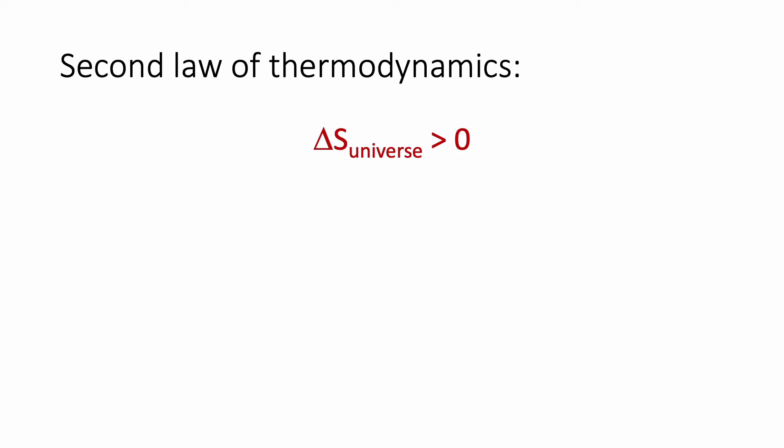Some people interpret this to mean that a reaction cannot happen unless something is getting more disordered, but that is not true. The question we have to ask ourselves is how can a system change to be more ordered? In other words, how can the delta S of that system be negative, less than zero? Think about something in your life that becomes more orderly.